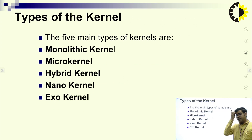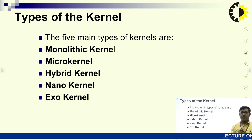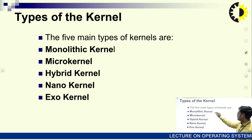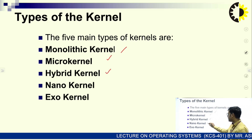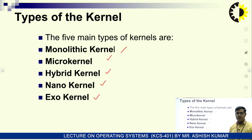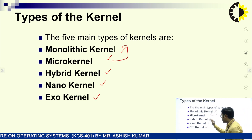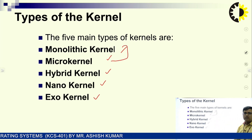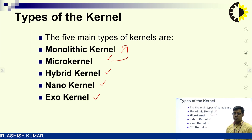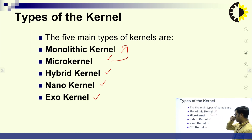Next are the types of kernel. Mainly there are 5 types of kernel: monolithic, microkernel, hybrid kernel, nanokernel, and exokernel. But in your syllabus, two kernels are mentioned — monolithic and microkernel. We will discuss each one by one.